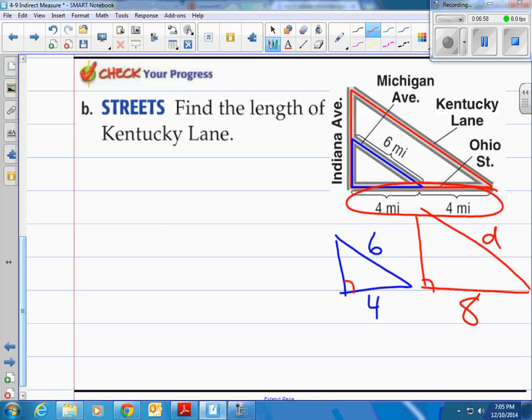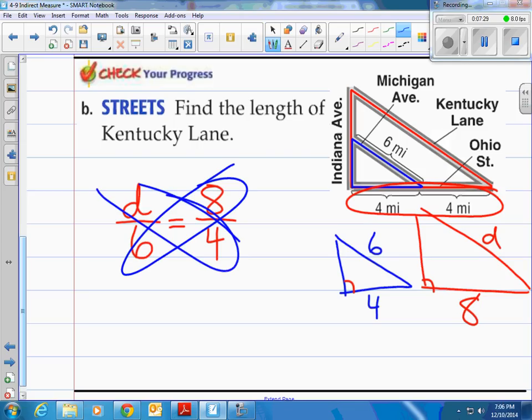These are both going to be right triangles, by the way. So we can compare. We can say that the distance of that hypotenuse relates to the hypotenuse on the other in blue. And then we come back and say, well, then the eight goes to the four because those are corresponding sides. And then we solve using our wonderful cross multiplication. So we have four times D is equal to six times eight. That's 48. We divide by four.